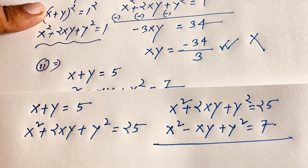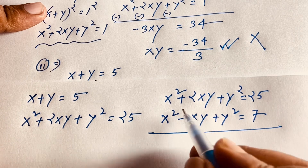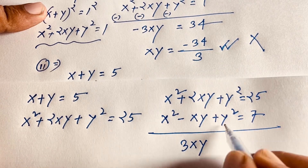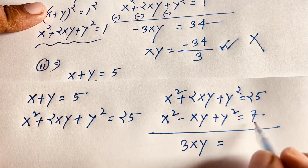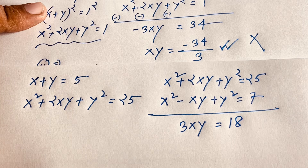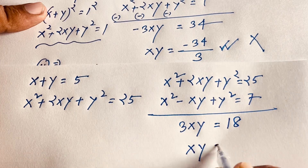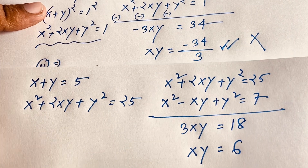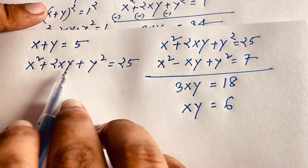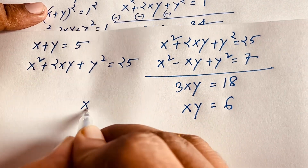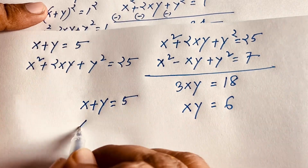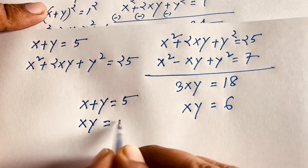Subtracting the equation x² − xy + y² = 7 from x² + 2xy + y² = 25, the squared terms cancel and we get 3xy = 18, so xy = 6. Therefore x + y = 5 and xy = 6.